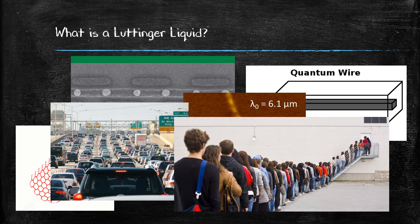This can be understood through the analogy of a traffic jam or a long line of people. The fermions are trapped in one dimension by the interactions between them, with no other dimension to move through and avoid each other.